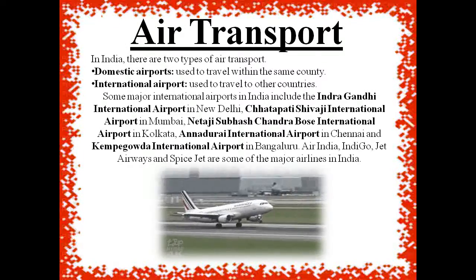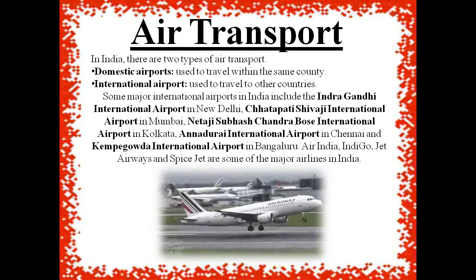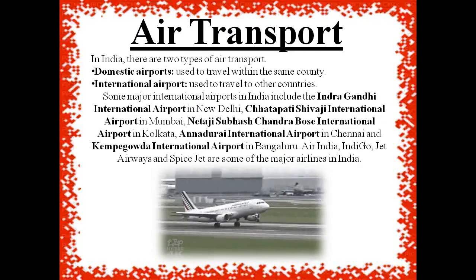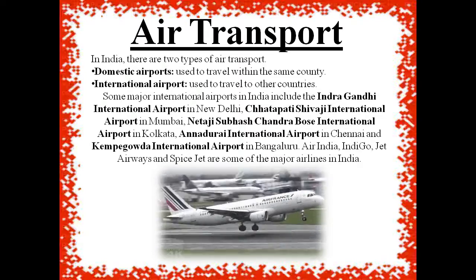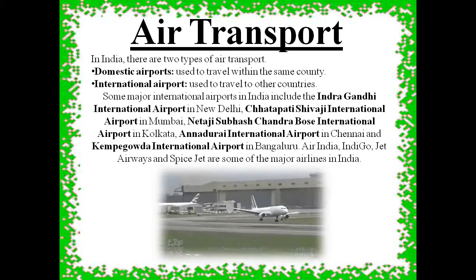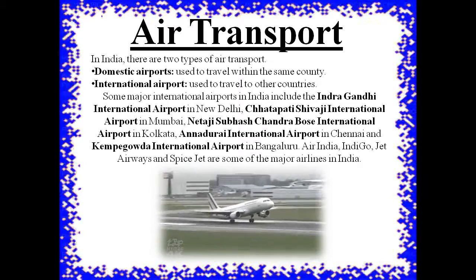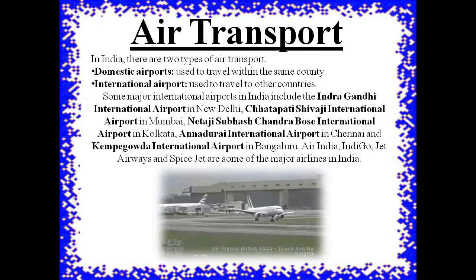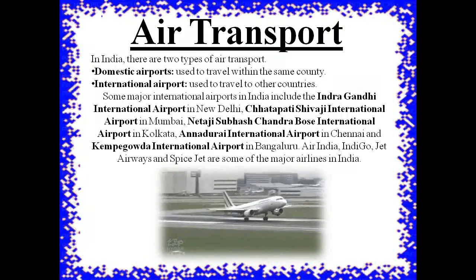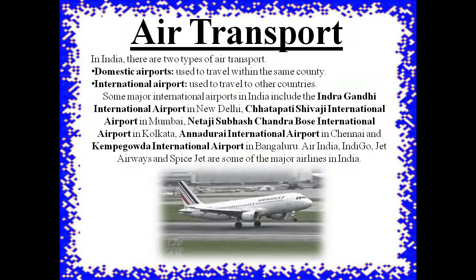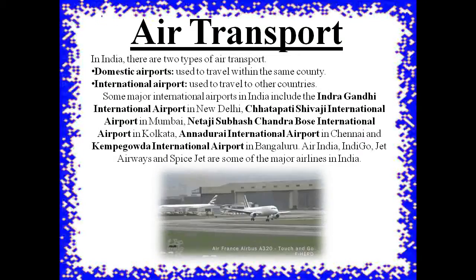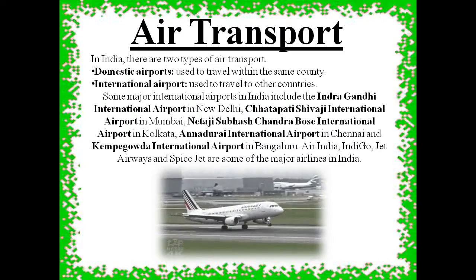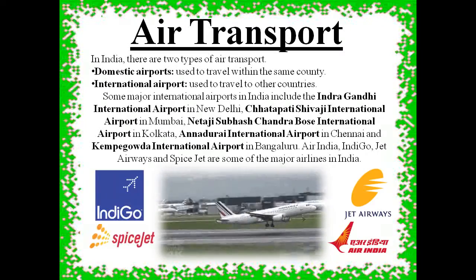In India, there are two types of airports: domestic airports, used for travelling within the same country, and international airports, used for travelling to other countries. Some major international airports in India include the Indira Gandhi International Airport in New Delhi, Chhatrapati Shivaji International Airport in Mumbai, Netaji Subhash Chandra Bose International Airport in Kolkata, Anna Durai International Airport in Chennai, and Kempegowda International Airport in Bengaluru.